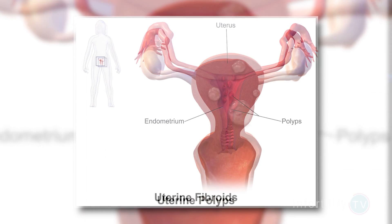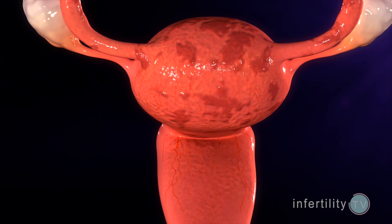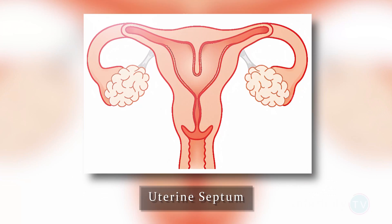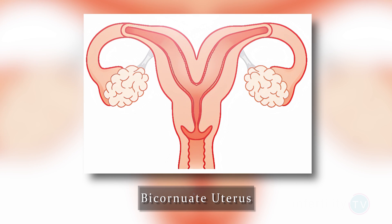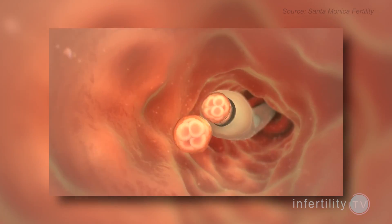Whatever type of uterine pre-testing your doctor performs, it is very important to correct those abnormalities before performing the embryo transfer. Polyps, fibroids, and scar tissue should be removed. Chronic inflammation should be treated. Uterine septums should be resected. Women who have a bicornuate uterus, however, may try an embryo transfer without surgery first, because this type of surgery is much more invasive.